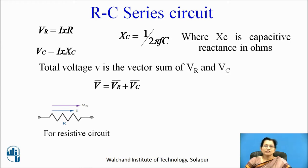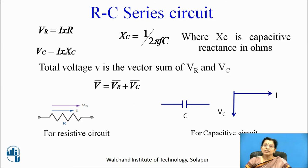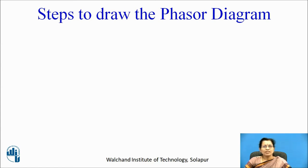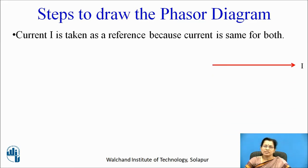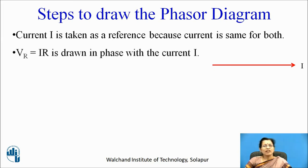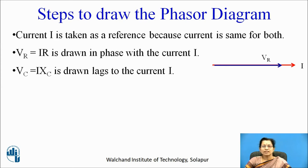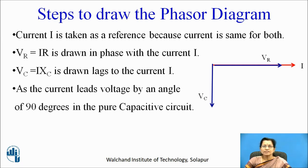For resistive circuit, Vr and I both are in phase. For capacitive circuit, current is leading to voltage by 90 degrees. Step by step we will discuss about the phasor diagram. Current I is taken as a reference because current is same for both resistor and capacitor. Vr is in phase with current I, and Vc lags current I, or we can also say that current leads Vc by 90 degrees for this capacitive circuit. In a pure capacitive circuit, current leads voltage by 90 degrees.